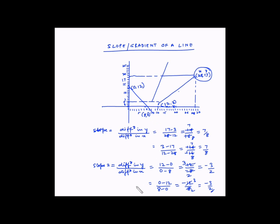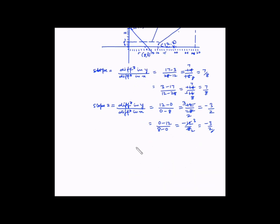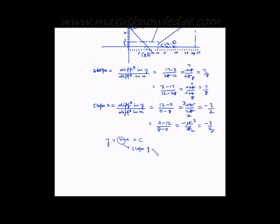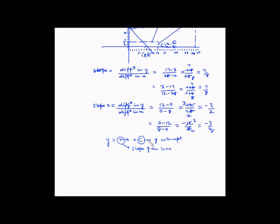Now let us look at the slope of a line in slightly different terms. Typically, the equation of a straight line is represented as y = mx + c. In this representation, m is the slope of the line, and c is the y-intercept — the coordinate on the y-axis where the line intercepts it.